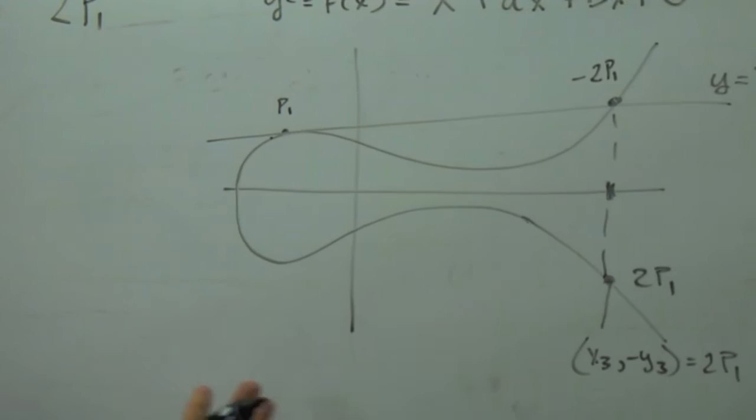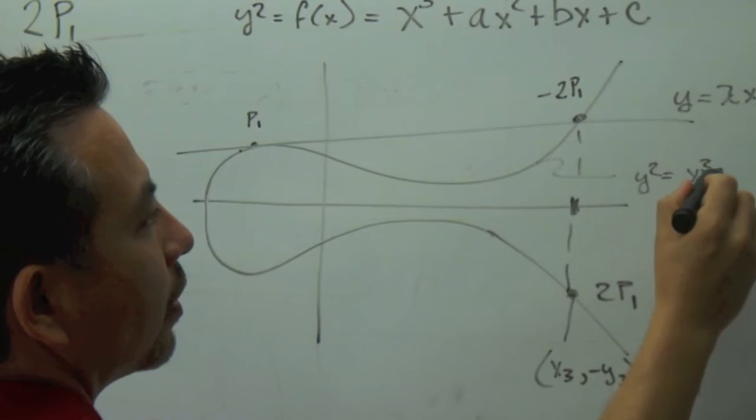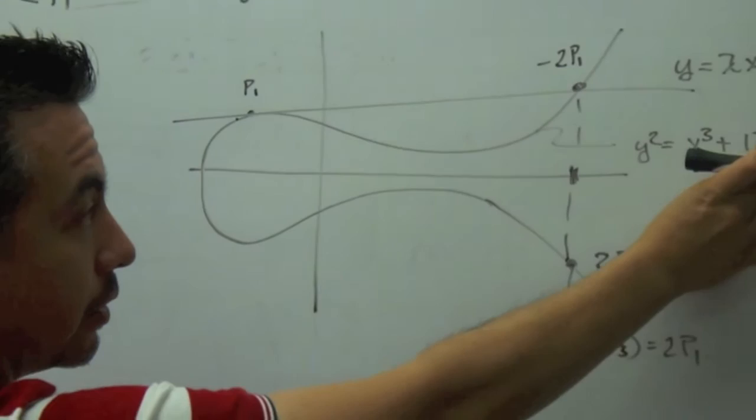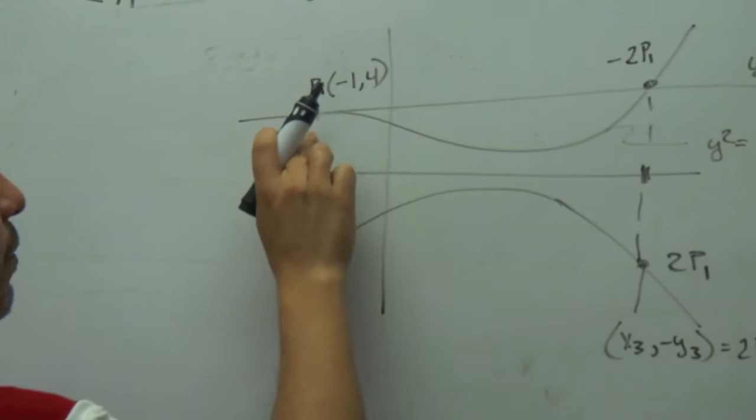Let's put a real value. So let's say this cubic curve is y squared equals x cubed plus 17, which is fine, because our discriminant is different than zero, so it's differentiable. And let's say that I wanted to add this point, which is P1 equals negative 1, 4. Let's start from there.